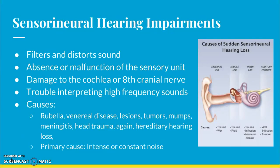The next major type is sensorineural hearing impairment. This causes a filtering or distortion of sound as it goes to the ear, mainly due to a malfunction of the sensory unit or a lack of a sensory unit. When there's damage or a malfunction, this is usually in the cochlea, and it can lead to trouble interpreting high-frequency sounds. Some causes include diseases like rubella, venereal disease, tumors, mumps, and meningitis, as well as head trauma.